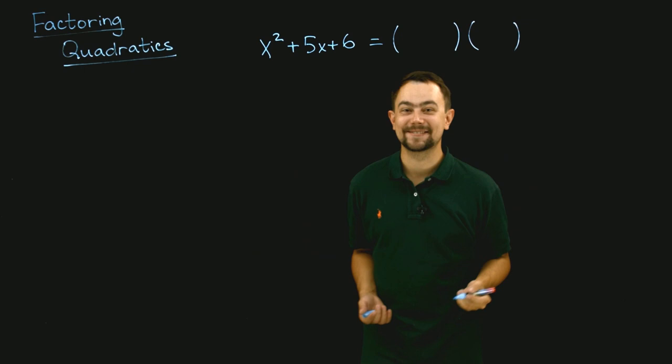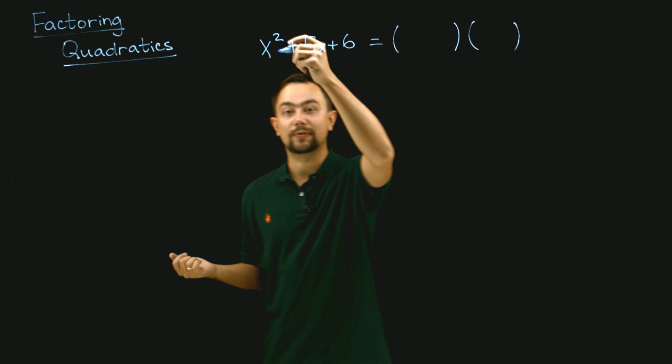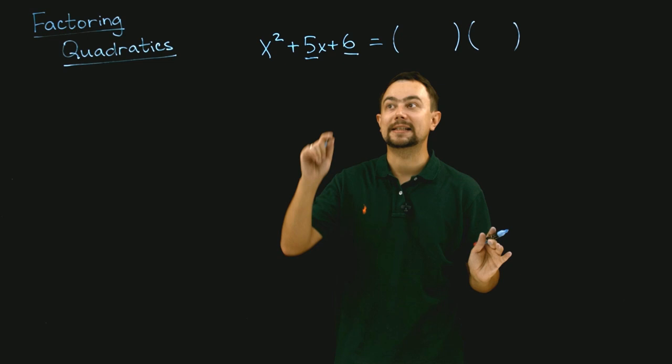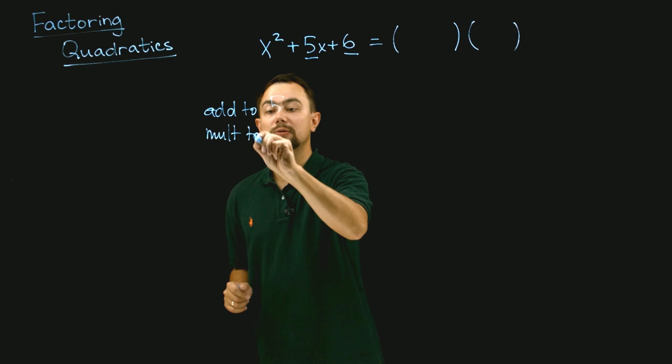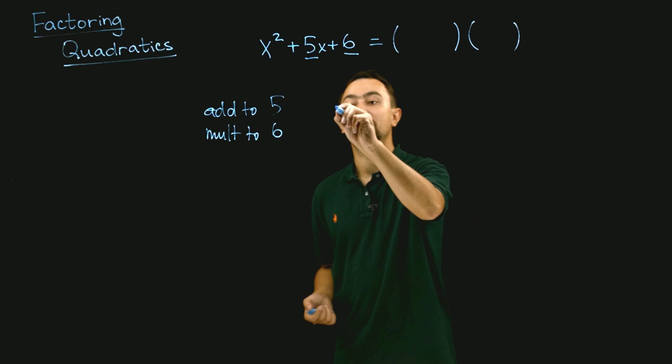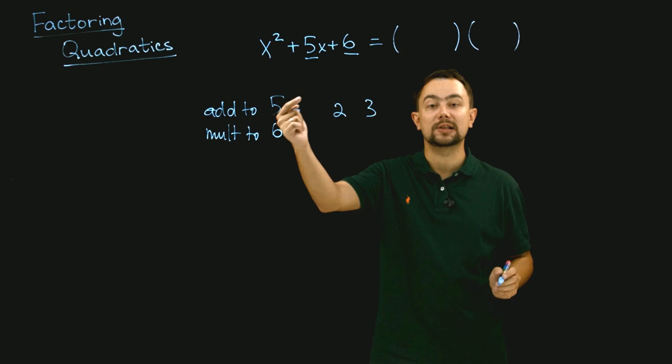Let's look at our coefficients. We have 1, which is in front of x squared, we have 5 and we have 6. We need to find two numbers that add to 5 and multiply to 6. These numbers are 2 and 3, because 2 times 3 is 6 and 2 plus 3 is 5.